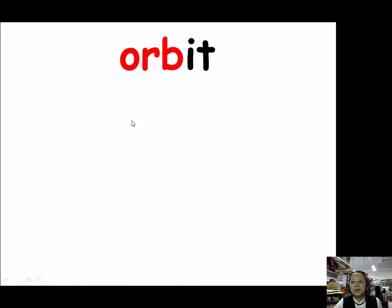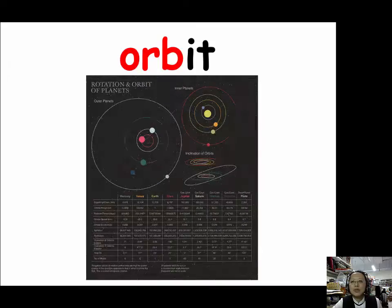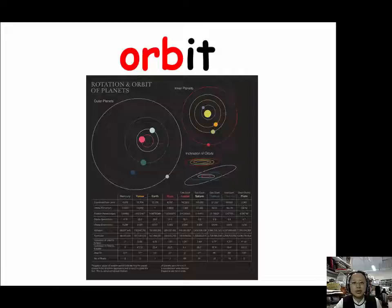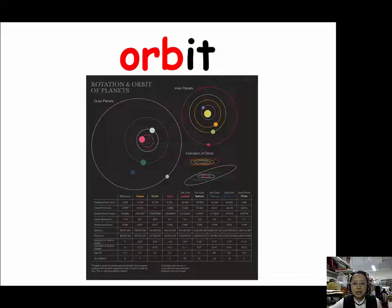For the prefix ORB, our example is orbit. Orbit is a circular or elliptical path of one object around another, like the Earth going around the Sun or the Moon going around the Earth. We say the Earth has an orbit around the Sun, or the Moon has an orbit around the Earth.